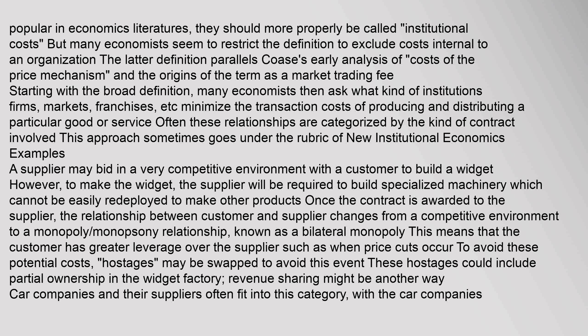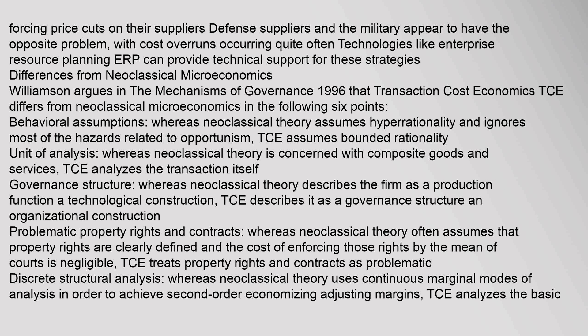Examples: A supplier may bid in a very competitive environment with a customer to build a widget. However, to make the widget, the supplier will be required to build specialized machinery which cannot be easily redeployed to make other products. Once the contract is awarded to the supplier, the relationship between customer and supplier changes from a competitive environment to a monopoly-monopsony relationship, known as a bilateral monopoly. This means that the customer has greater leverage over the supplier, such as when price cuts occur. To avoid these potential costs, hostages may be swapped — these could include partial ownership in the widget factory. Revenue sharing might be another way. Car companies and their suppliers often fit into this category, with car companies forcing price cuts on their suppliers. Defense suppliers and the military appear to have the opposite problem, with cost overruns occurring quite often. Technologies like enterprise resource planning (ERP) can provide technical support for these strategies.